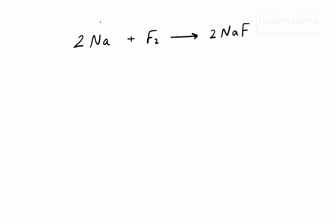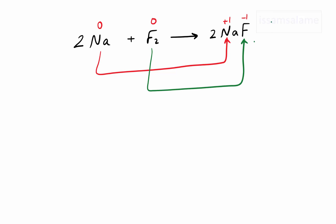Let's have another example: the reaction of sodium with fluorine to give sodium fluoride. The oxidation number for sodium is 0 since it's a free element, and the same for fluorine. In the product, sodium in compounds is always +1 and fluorine in compounds is always -1. As you can see, the oxidation numbers of sodium and fluorine changed, so this is a redox reaction.